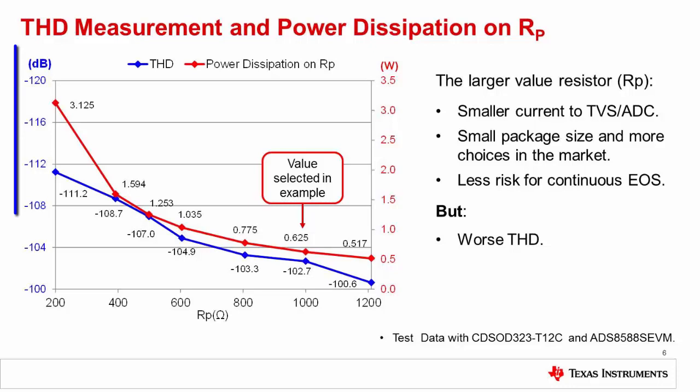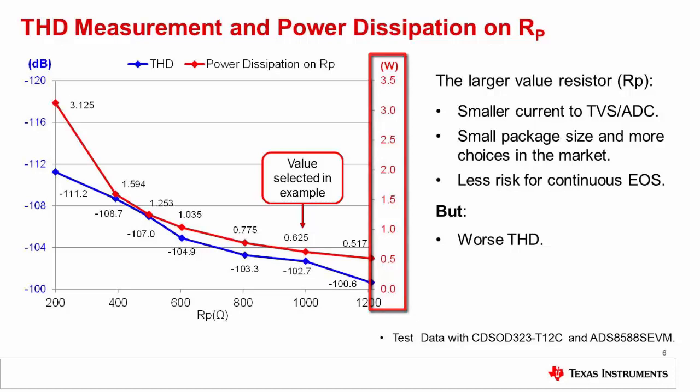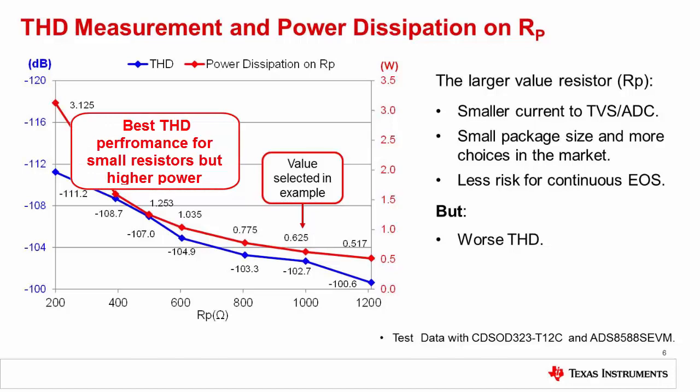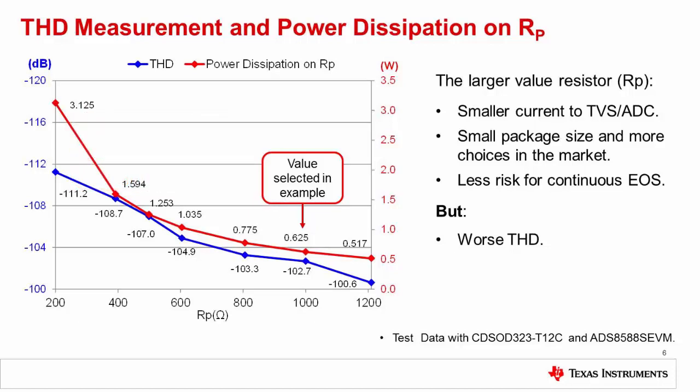This graph shows THD performance on the left in blue and power dissipation on the right in red for the protection circuit over a wide range of RP resistance values. Notice that the best performance is achieved with small resistors, but the power dissipation for the small resistors will be very high during a continuous fault event. This relationship can make it very difficult to create a compact, low-cost, high-performance circuit that is protected from large, steady-state fault conditions. On the next slide, we will consider a device that can be used in place of the resistor, which will allow us to achieve better THD performance without using a large, high-power device.